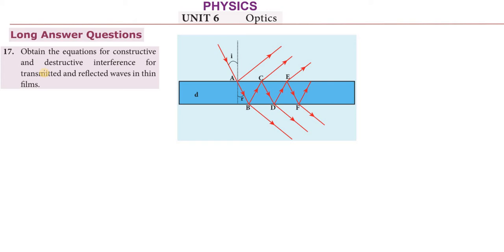We will show the thin film in the soap bubble. The thickness of the thin film is denoted as D. If we consider a thin film, a parallel beam of light will pass through it. The first thing which happens is the incident beam — the incident light hits the thin film surface.